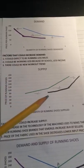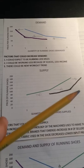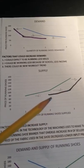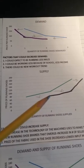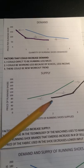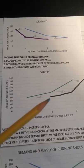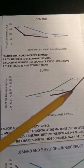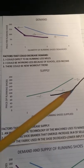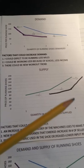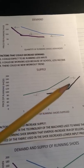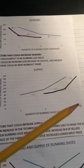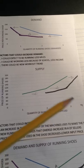This increase in supply is represented by this black line here. Now at a price of $75, the quantity of running shoes supplied will be 2. At a price of $100, the quantity supplied will now be 3. And at a price of $175, the quantity of running shoes supplied will now be 4.